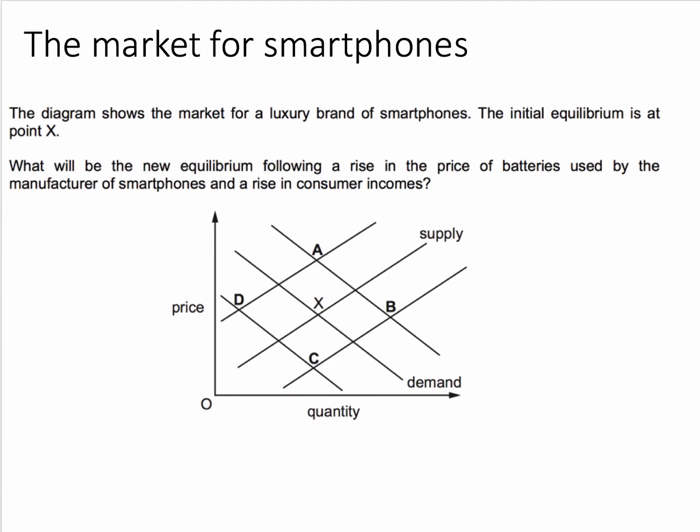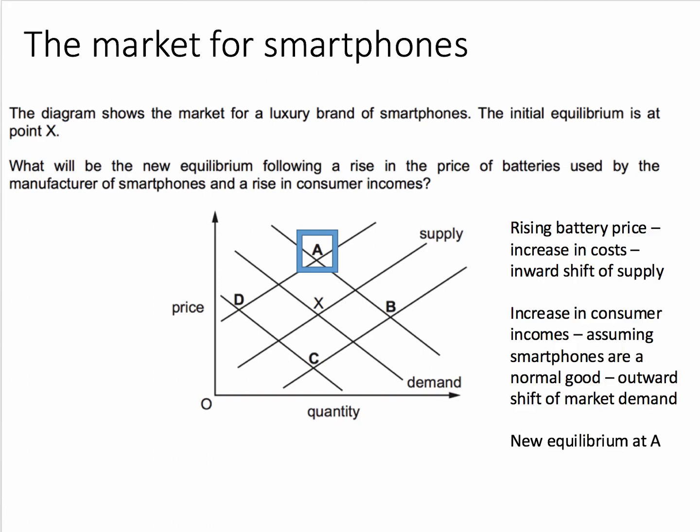So what did you get for this question? The initial equilibrium was X. The new equilibrium is A. Hopefully got that right. So we're looking at a double shift — a shift in supply, a shift in demand.